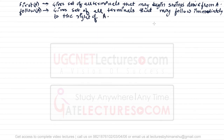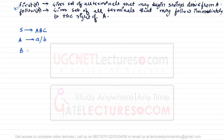Let us discuss FIRST one by one. Consider the following grammar: S derives A B C, where A derives small a or small b, B derives small c or small d, and C derives small e or small f.